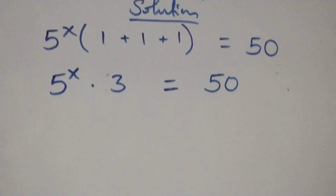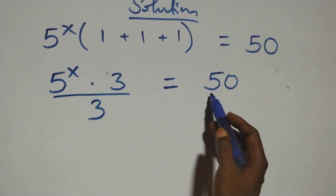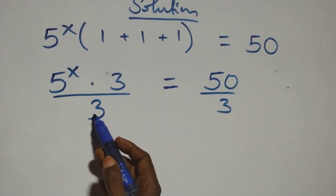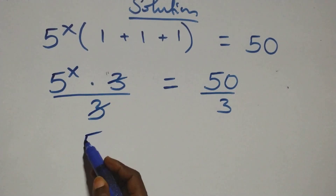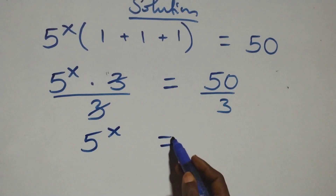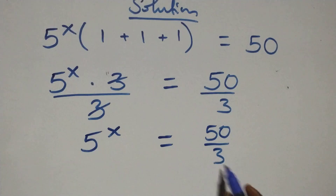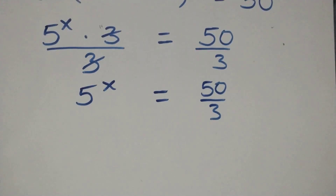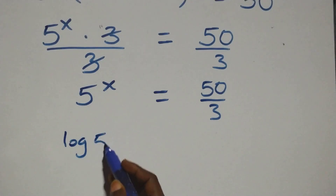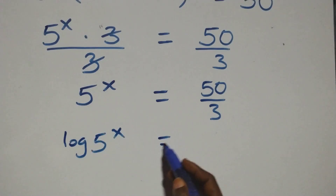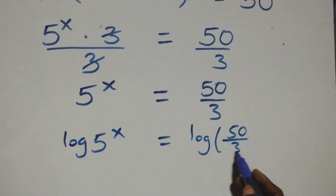The next step: we divide both sides by 3. The 3's cancel each other and we have 5 raised to power x equals 50 over 3. Then we take the log on both sides: log of 5 raised to power x equals log of 50 over 3.